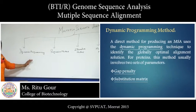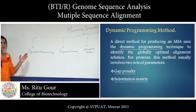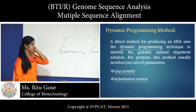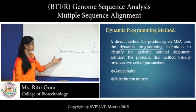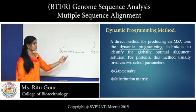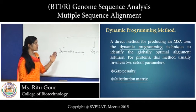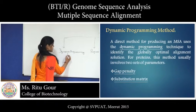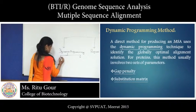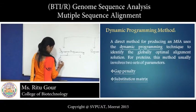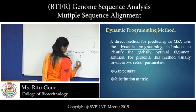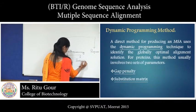First is dynamic programming method. It is the first essential program which is used for multiple sequence alignment. It is a method in which we align two or more sequences on the basis of dynamic programming. It requires a few algorithms like Smith-Waterman algorithm and Needleman-Wunsch algorithm. Dynamic programming method requires two steps to align two or more sequences.